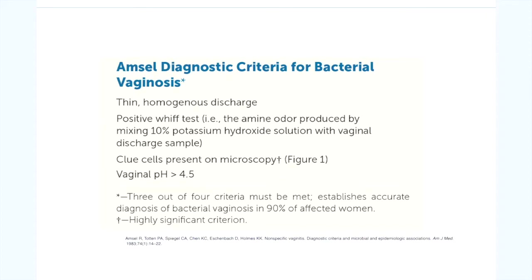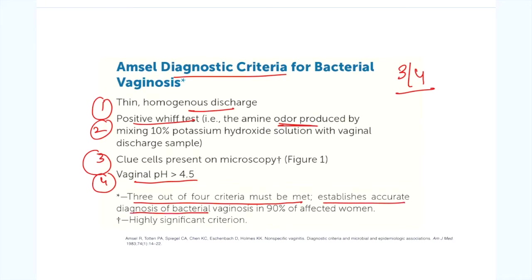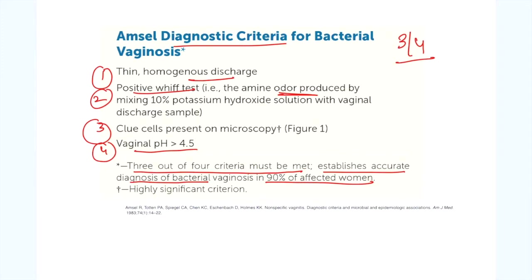Amsel et al. proposed a set of practical diagnostic criteria for the clinical diagnosis of bacterial vaginosis, now accepted as the gold standard. Three out of the four criteria must be met to establish the diagnosis. These four criteria are: first, presence of thin homogenous adherent white discharge; second, a positive Whiff test — fishy amine odour after addition of potassium hydroxide; third, presence of clue cells; and fourth, vaginal pH more than 4.5. Meeting three of four criteria establishes an accurate diagnosis in 90% of affected women.